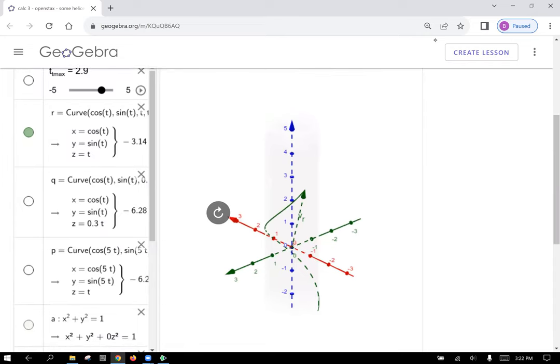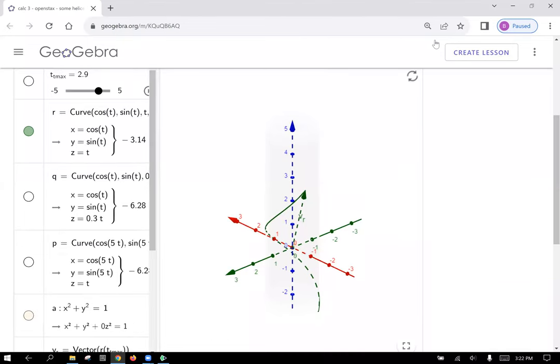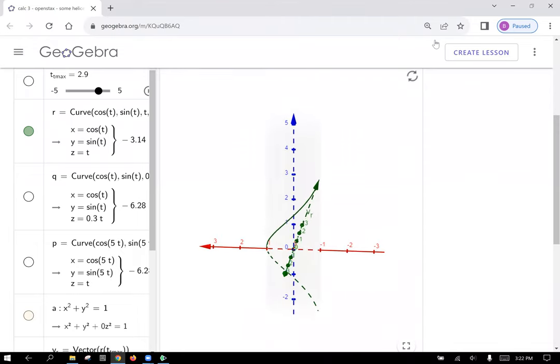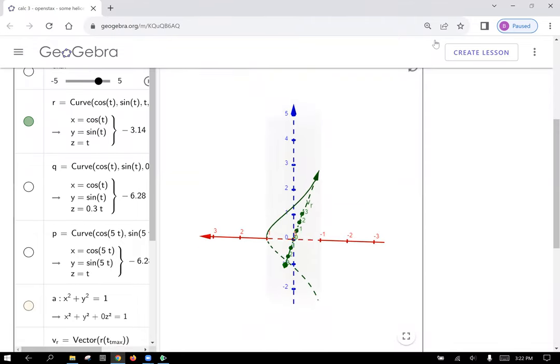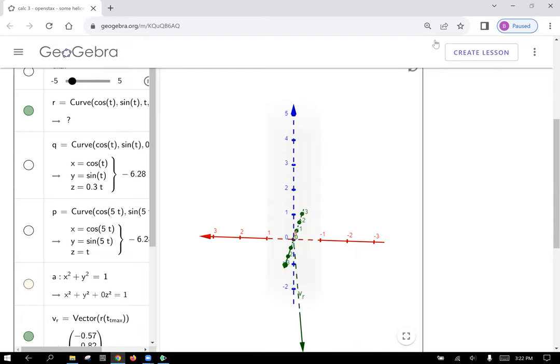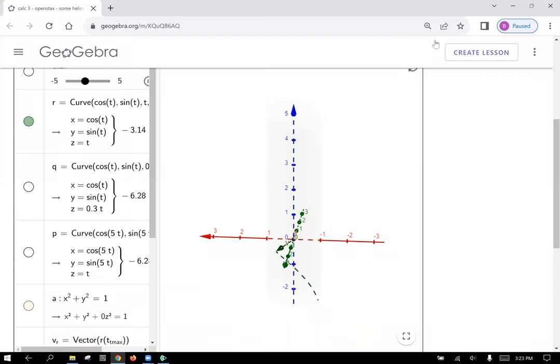What we've got here is a very faint cylinder there. And if I hit play on this t max slider, notice what happens. There's a vector that points from the origin, a position vector to a point on this curve. I've plotted the vector valued function plotting out this space curve, which is a helix that's wrapped around this cylinder.